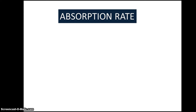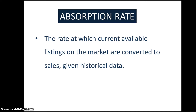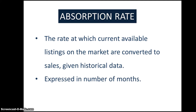So what is absorption rate? Simply put, it is the rate at which current available listings on the market are converted to sales given historical data. It is expressed in terms of number of months. For example, an absorption rate of two months means that there is two months' worth of housing supply on the market. Said in another way, this figure means that the current inventory is expected to run out in two months. So, absorption rate is used as an indicator of how tight the housing supply is, whether it's a buyer's market or seller's market.